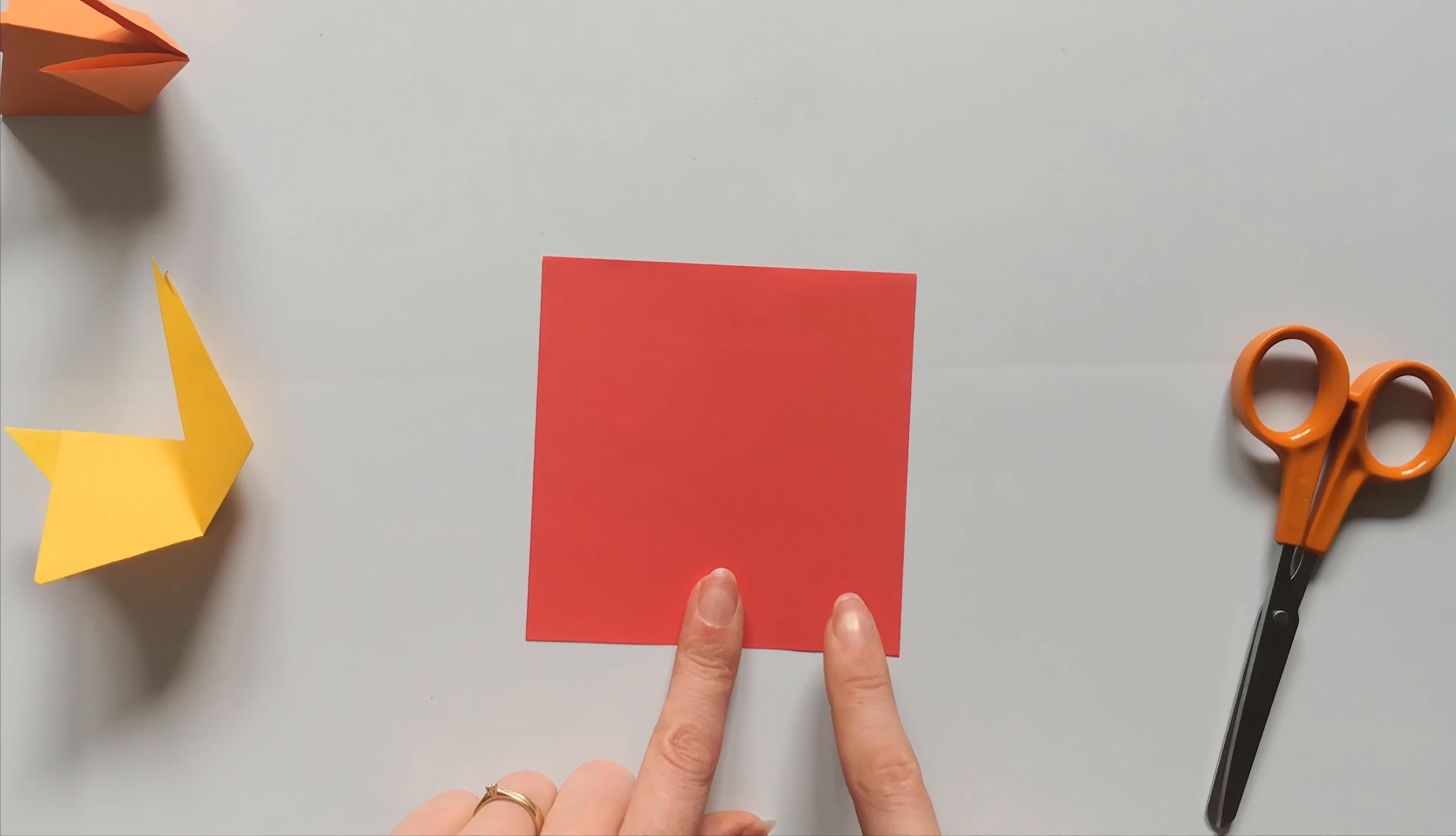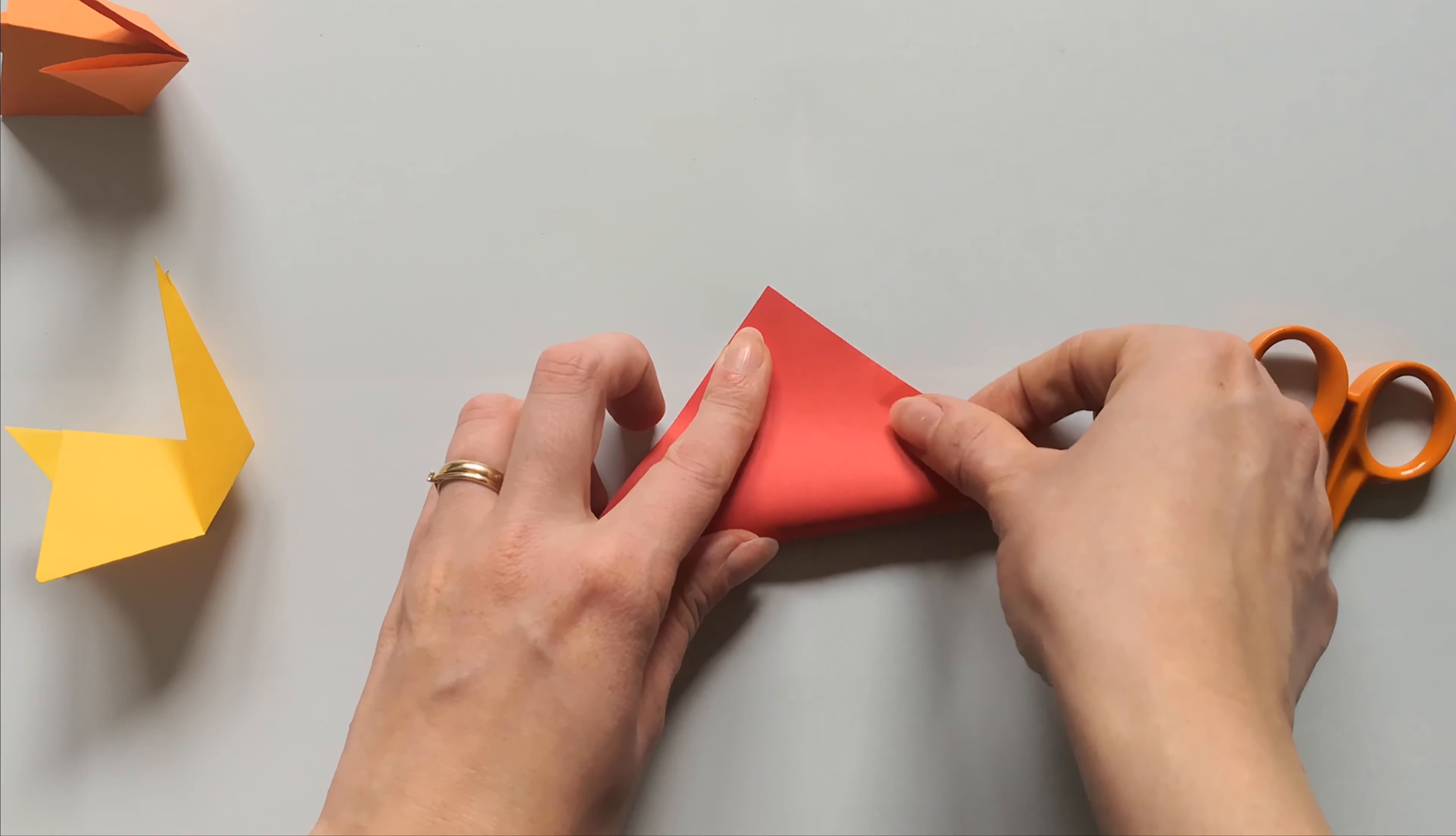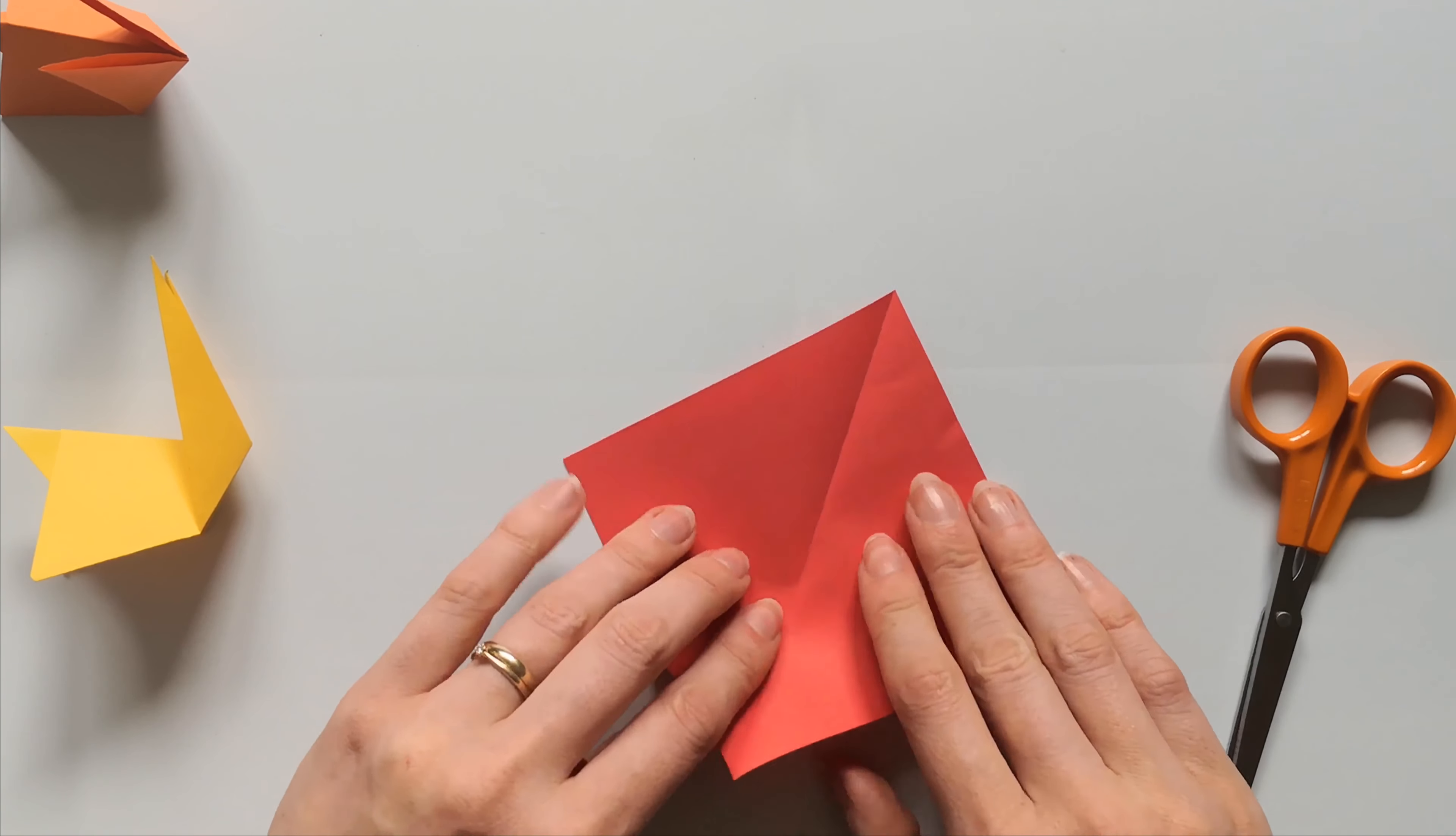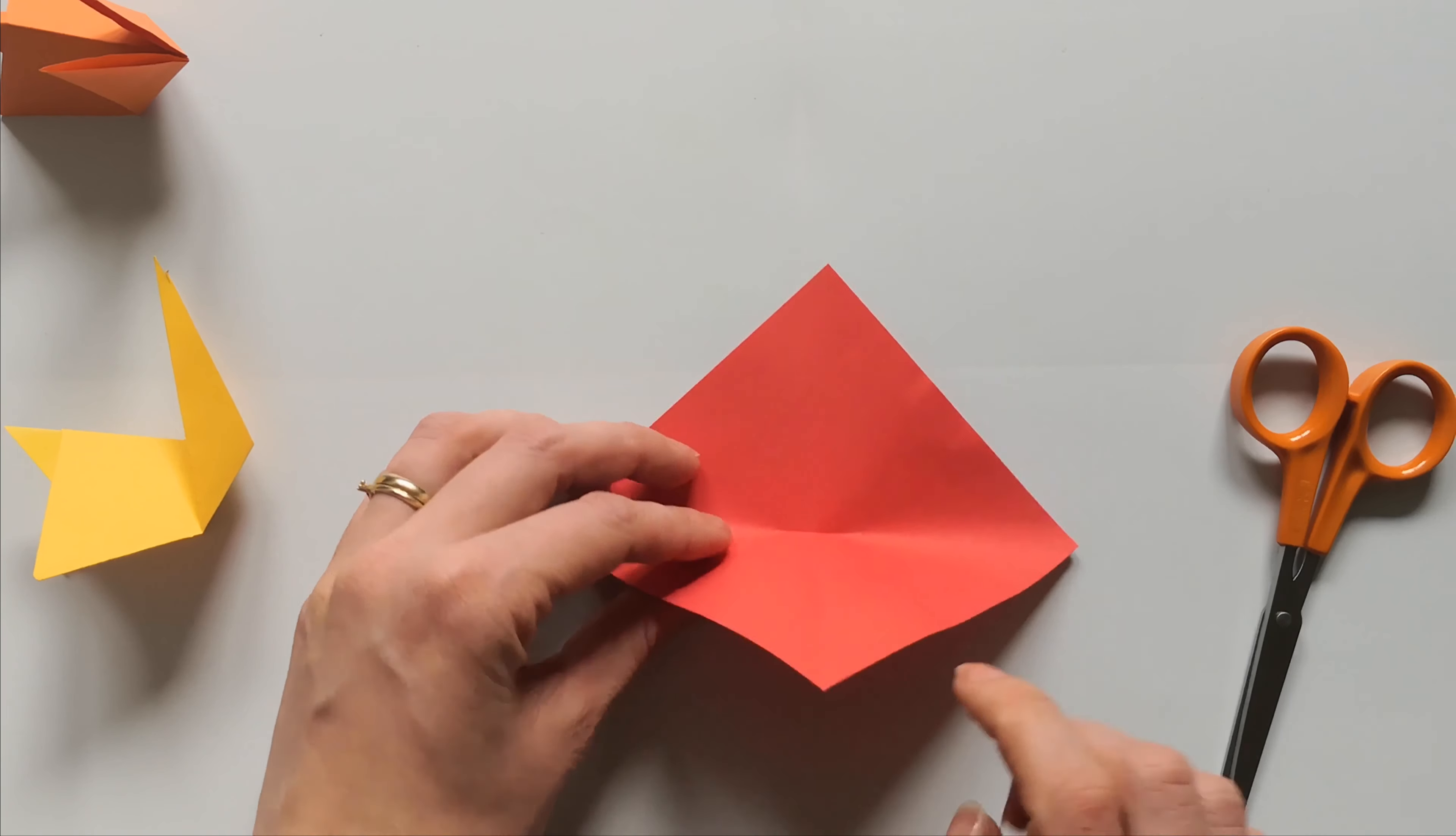Now let's start by folding your paper in half on a diagonal line. Open it and fold it again on a diagonal line. But this time, once you have it, just press the middle of the paper down and open your paper.